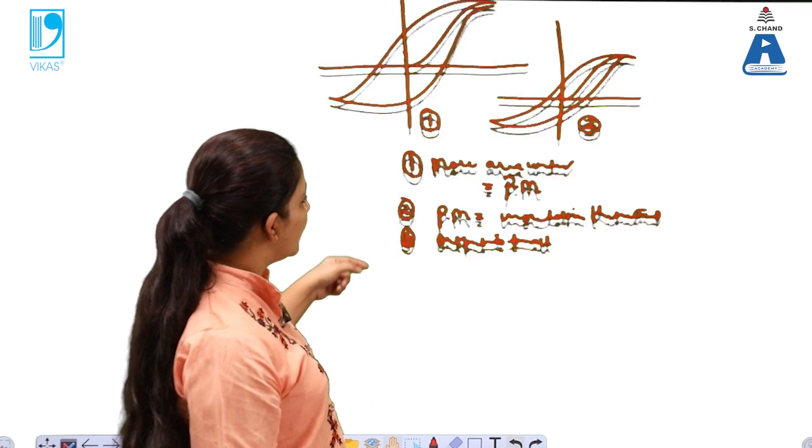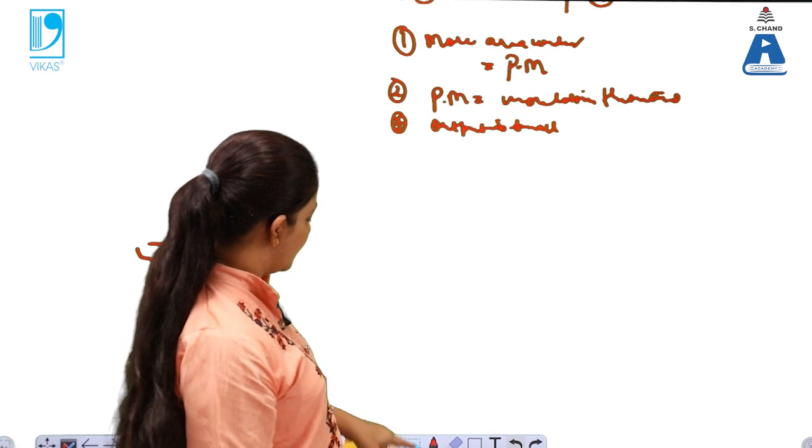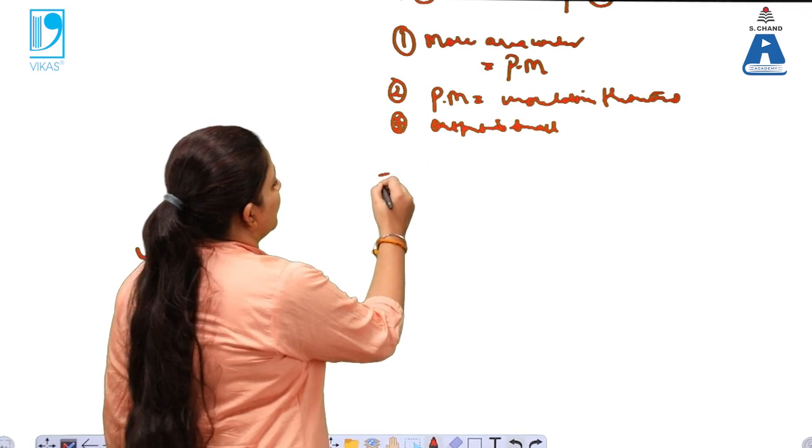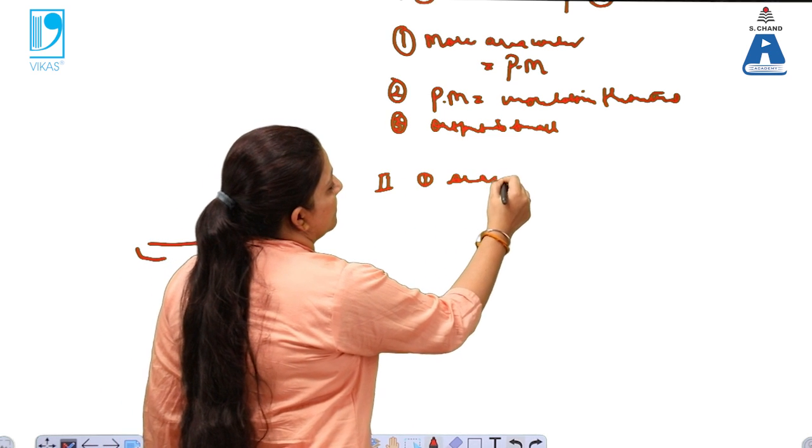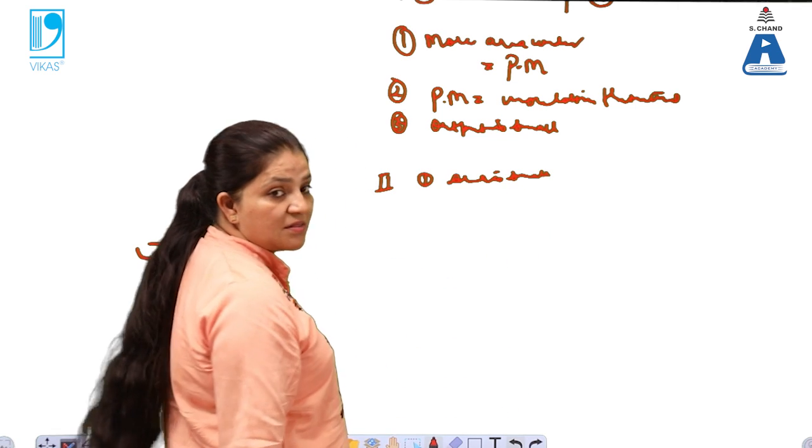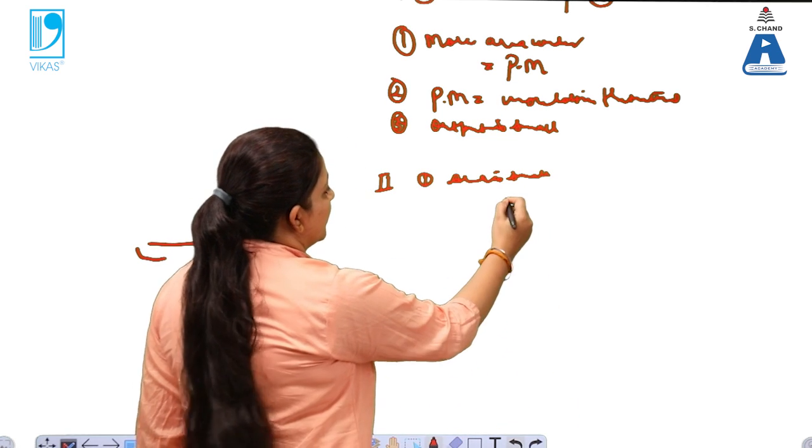Now for the second one, in case of the second BH curve, area is small. For the second case, area is small.